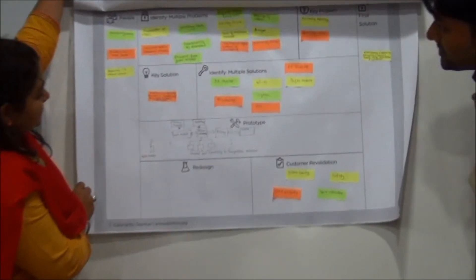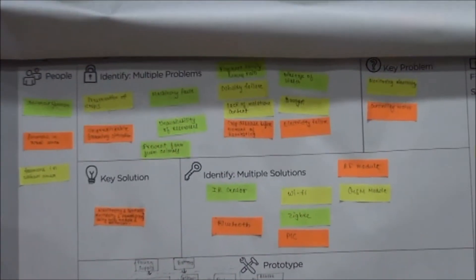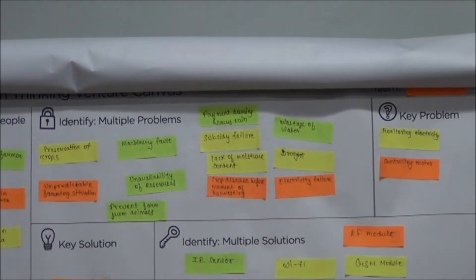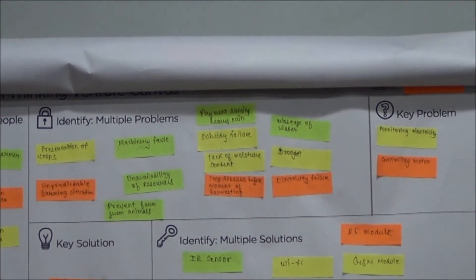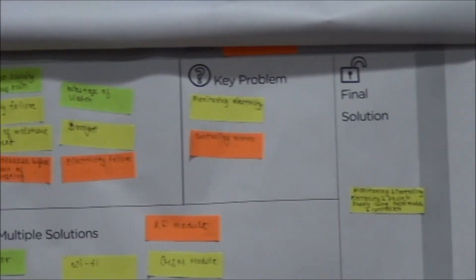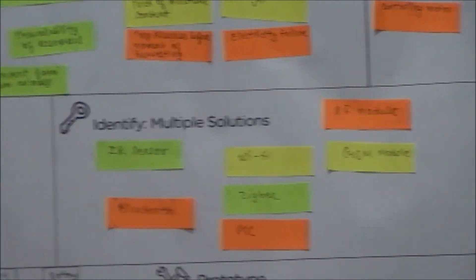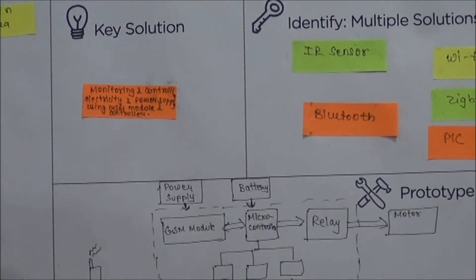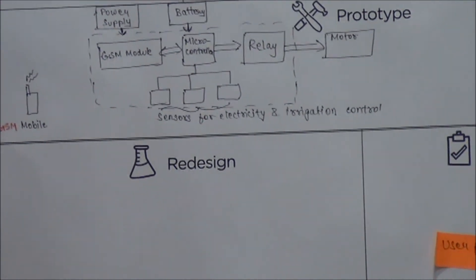The last canvas is the design thinking venture canvas. In this we define multiple problems. From these multiple problems, we define the key problem. Then we define various solutions for that key problem. From the various solutions, we define the key solution. So we made a prototype model and conducted customer evaluation, then we give our final solution. Thank you.